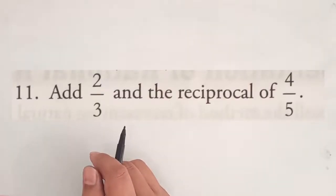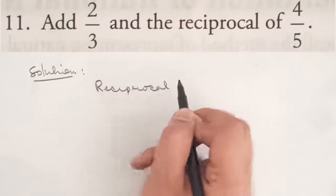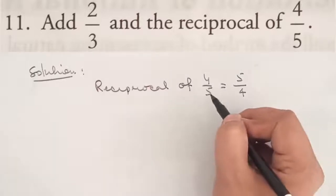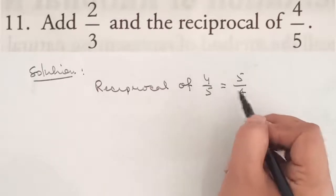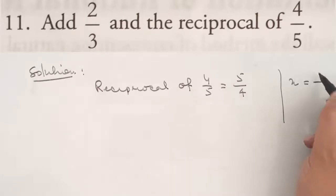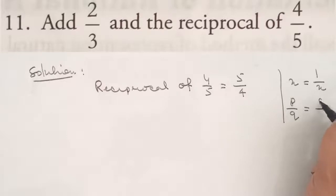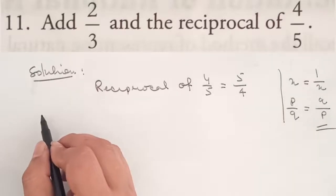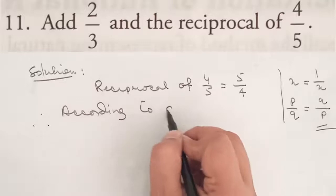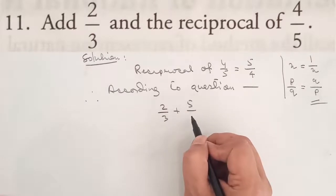Question 11: Add 2 by 3 and the reciprocal of 4 by 5. The reciprocal of 4 by 5 equals 5 by 4. To find the reciprocal of p by q, we write q by p. According to the question, we now add 2 by 3 plus 5 by 4.